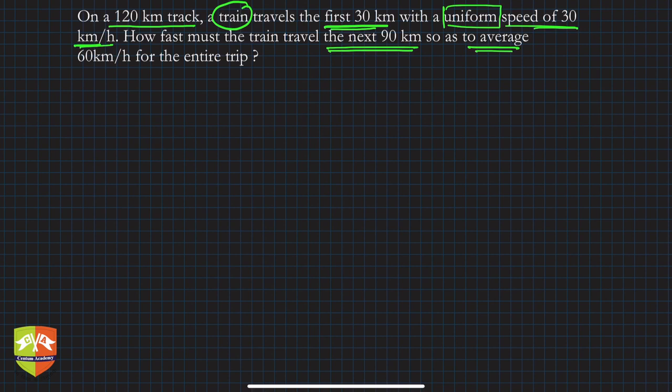Once again: there's a 120-kilometer track, a train travels the first 30 kilometers with a uniform speed of 30 kilometers per hour. How fast must the train travel the next 90 kilometers so as to average 60 kilometers per hour for the entire trip? On first look, it appears to be a problem related to average speed.